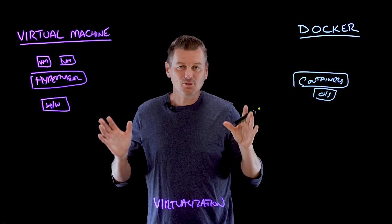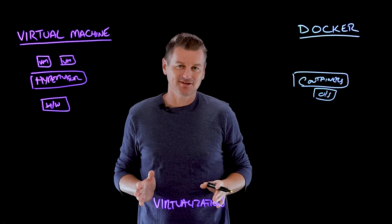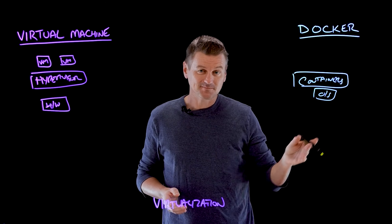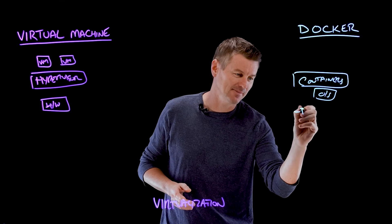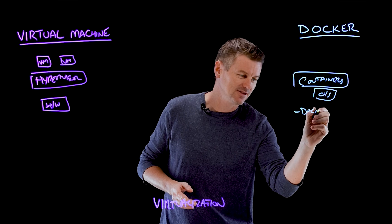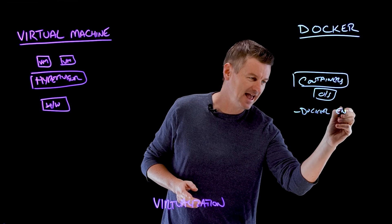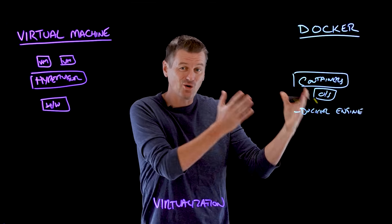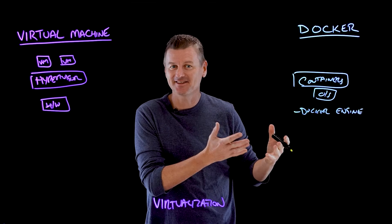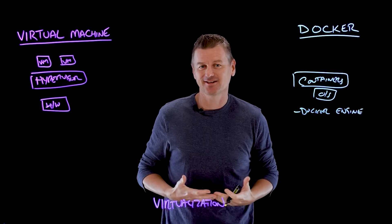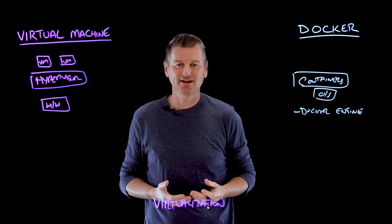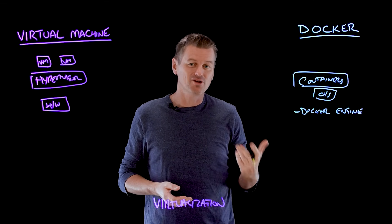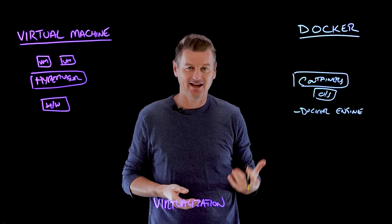Let's break down the main components of both solutions, starting with Docker. The first component is called the Docker Engine. This is the core software responsible for managing the life cycle of Docker containers — things like providing the infrastructure for creating, running, and orchestrating the containers.